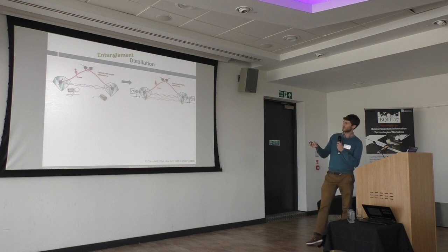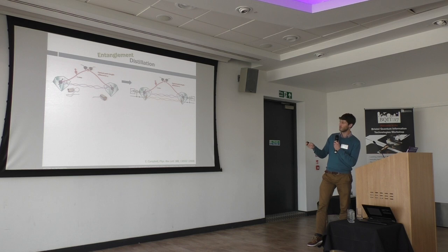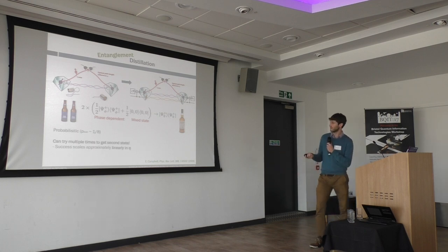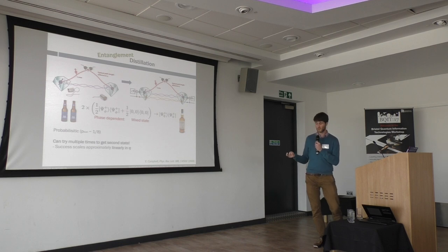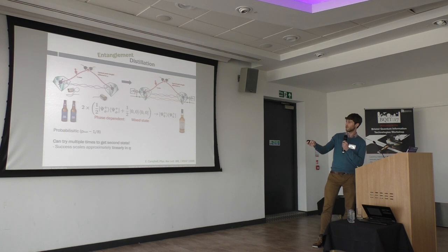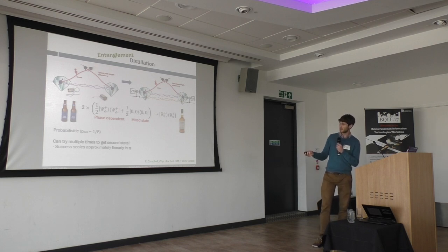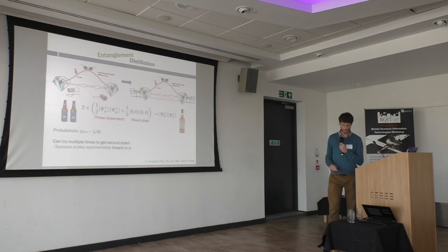What we do is, instead of producing one state, we make two terrible states, and then remarkably, just by local processing and classical communication, you can go from two imperfect states to a higher-quality entangled state. The catch is that this is probabilistic — this particular scheme only succeeds about an eighth of the time, and you have to produce two states. But the nice thing is not only do you produce a higher-quality state, you've also broken the eta-squared scaling: instead of requiring two clicks simultaneously, you produce one state with a single click after many tries, store it, then try many times again for the second state. So the success rate scales closer to linear in eta.